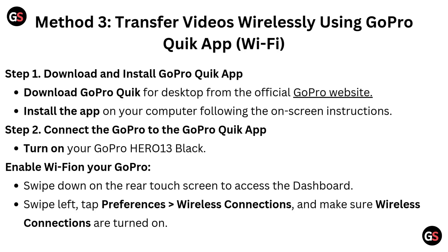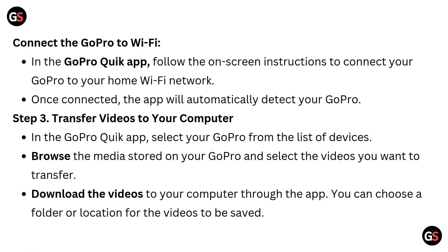Step 2: Connect the GoPro to the GoPro Quick App. Turn on your GoPro Hero 13 Black and enable Wi-Fi. Swipe down on the rear touchscreen to access the dashboard, swipe left, tap Preferences, then go to Wireless Connections and make sure wireless connections are turned on. In the GoPro Quick App, follow the on-screen instructions to connect your GoPro to your home Wi-Fi network. Once connected, the app will automatically detect your GoPro.